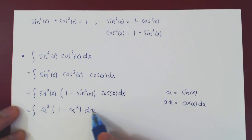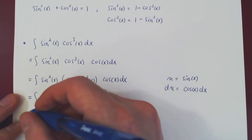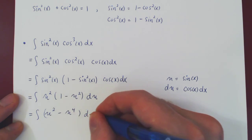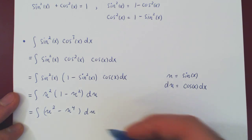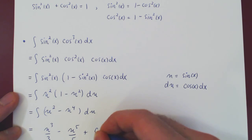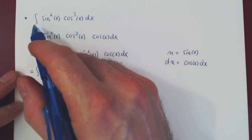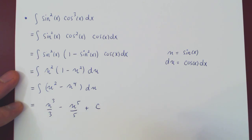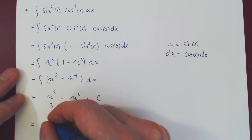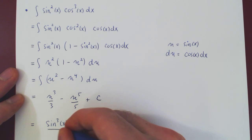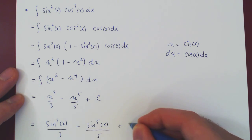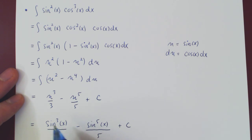Now we integrate a simple polynomial in u — multiply out and use the power rule. Since our original integral was in terms of x, we replace u by sin(x) to get the final answer: sin³(x)/3 - sin⁵(x)/5 + C. You could also factor out sin³(x) from both terms.